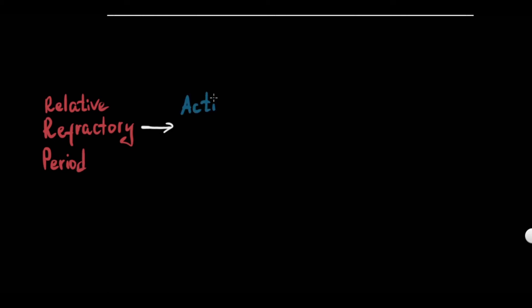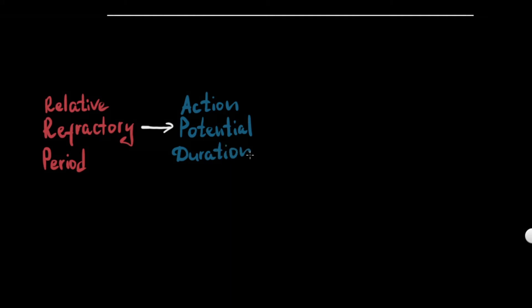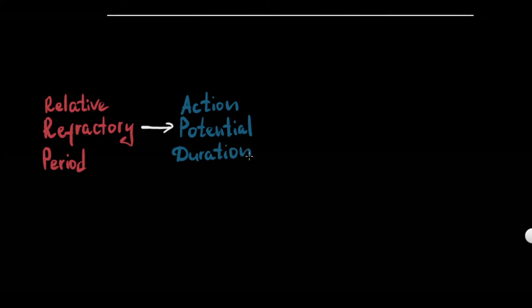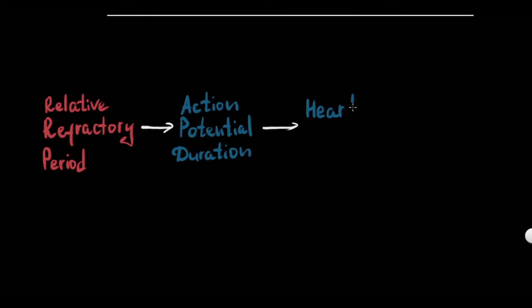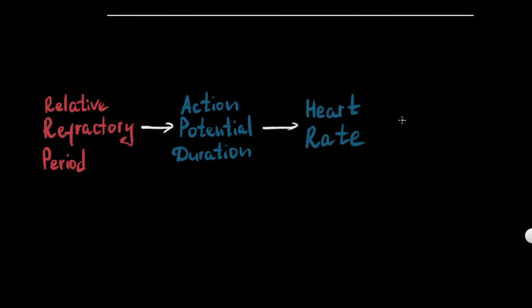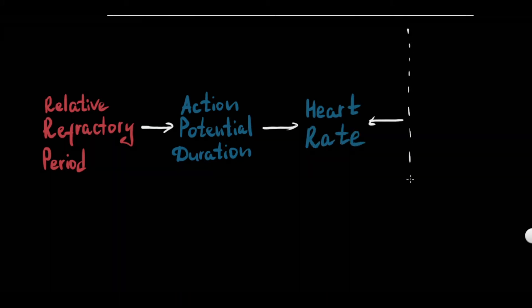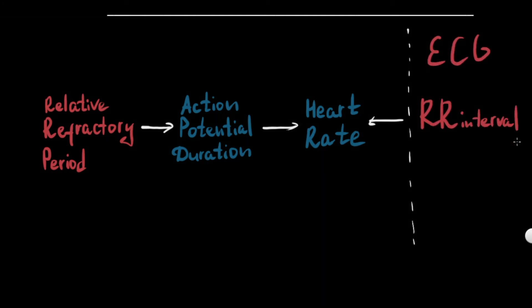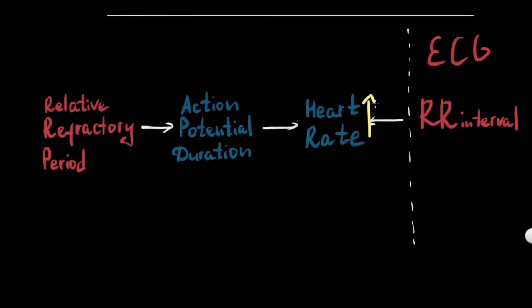Aberrant conduction depends on the relative refractory period of conduction tissues, and the duration of the relative refractory period depends on action potential duration, which in turn depends on heart rate. Changes in heart rate are reflected in the R-R interval. Therefore, the duration of the action potential and refractory period changes with the R-R interval of the preceding cycle. A shorter R-R interval is associated with a shorter action potential and shorter refractory period.